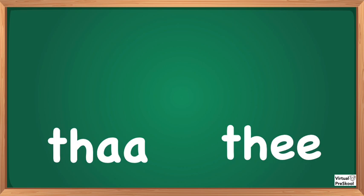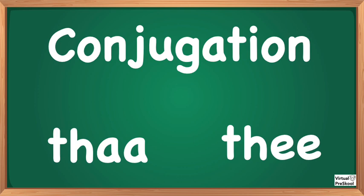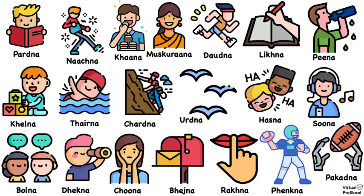This process of changing the verb is called conjugation, and this is an important part of learning Hindi and any other language. Conjugation is in pretty much every language, and it's a really important part of being able to speak a language. Now that you know the first steps of conjugation, you can apply this to any Hindi verb — and there are a lot of verbs in Hindi. By knowing these rules, you can take them and apply them to any verb.